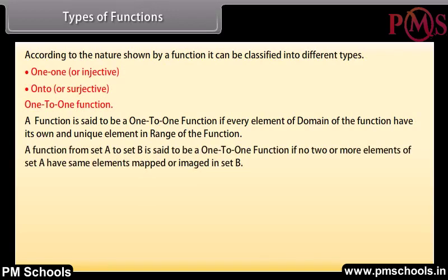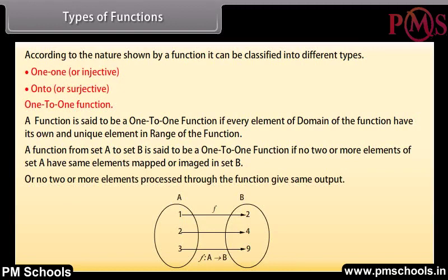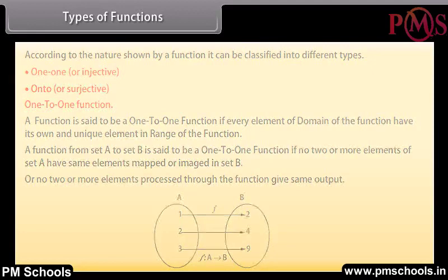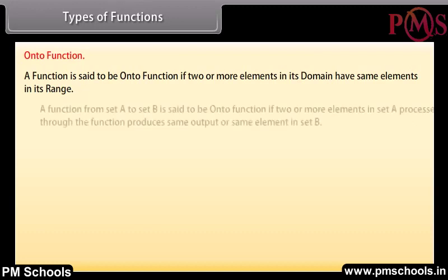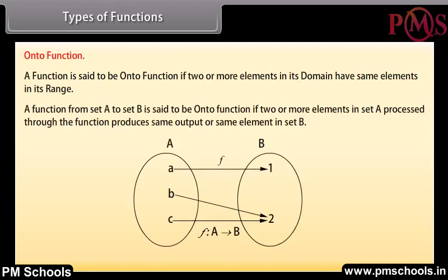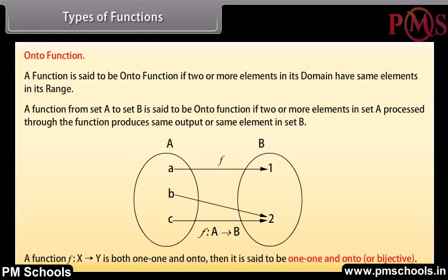A function from set A to set B is said to be a one-one function if no two or more elements of set A have the same element mapped in set B, or no two or more elements processed through the function give the same output. Onto function: A function is said to be onto if two or more elements in its domain have the same elements in its range. A function f from X to Y that is both one-one and onto is said to be bijective.